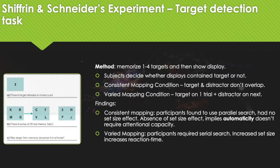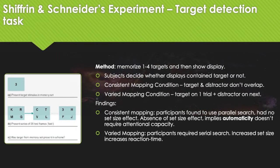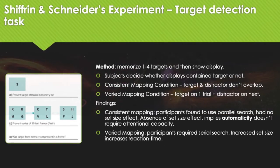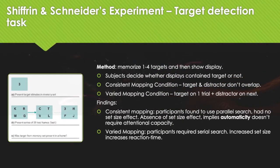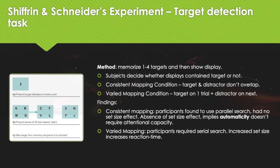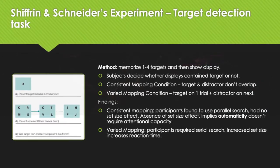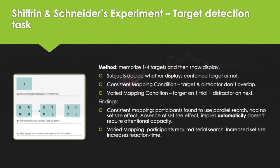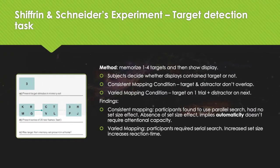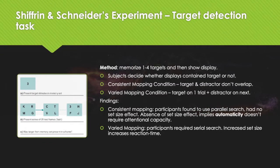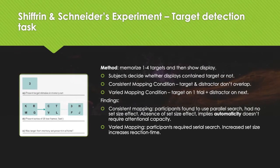Shiffrin and Schneider performed an experiment dealing with the target direction detection task, whereby participants memorized one to four targets and were then shown a display. Subjects decided whether the display contained a target using consistent mapping — where targets and distractors do not overlap — and varied mapping, where targets on one trial may be a distractor on the next. It was found that consistent mapping brought about parallel searches and there was no set size effect, because consistent mapping allowed for practice. The absence of the set size effect in consistent mapping meant that automaticity does not require attention or capacity.